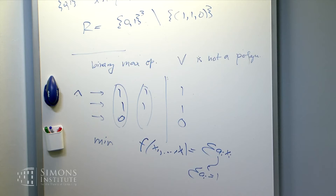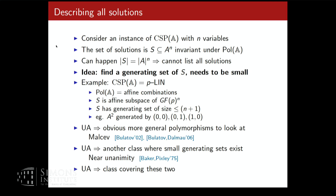The solution set is an affine subspace — invariant under affine combinations — and it has a generating set of polynomial size. For n variables it's n+1 generators. Universal algebra then suggests the obvious next class to look at: Maltsev algebras. It also suggests other classes where invariant sets have small generating sets. There is a general theorem: if all invariant n-ary relations have small generating sets — equivalently, if the number of invariant relations is only exponential rather than double-exponential — then there is an algorithm solving CSP and finding the generating set. Some call it a generalization of Gaussian elimination.